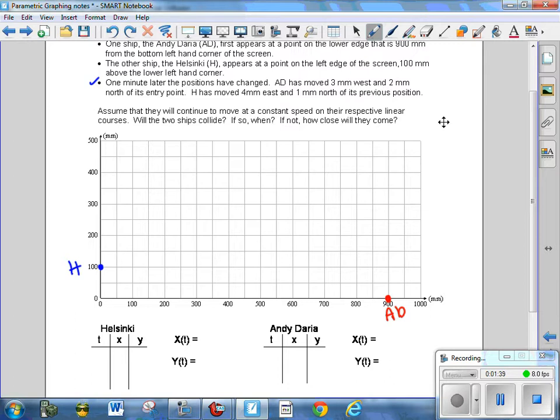If we look, it's going to be very difficult with a scale where each block equals 50 to draw 3 millimeters west and 2 millimeters north. But if it's continuing at a constant rate, then in 100 minutes it should be 300 millimeters west and 200 millimeters north. So 300 millimeters to the west and 200 millimeters to the north. Then we should be right here, at 100 minutes away from the time it first got on the screen. And I am going to draw a line indicating its path.